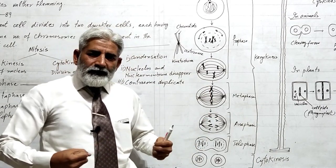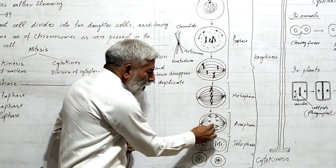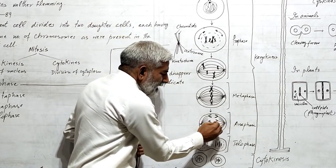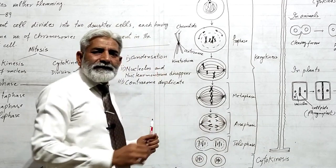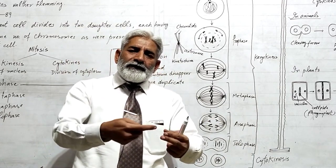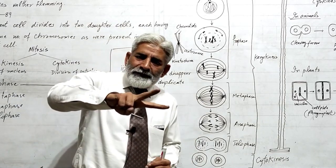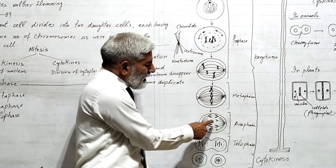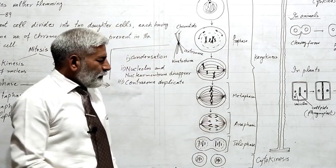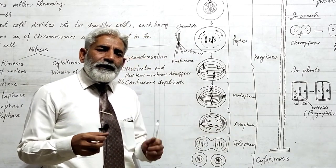The two chromatids are then pulled towards the opposite poles. Here you can see they are pulling towards the opposite poles.